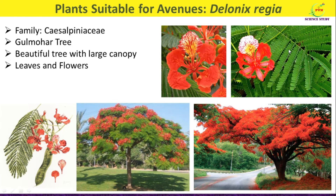These are the leaves of Delonix regia — feathery, deciduous, bipinnately compound leaves which fall off during summer, leaving bright orange-red flowers on branches, forming the point of attraction. Here you can see the flowers. The plant is free-growing and easily raised from seeds. Here you can see the pod of Delonix, which contains the seeds.